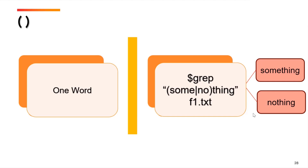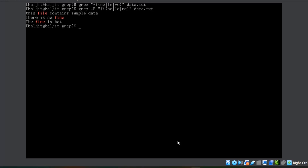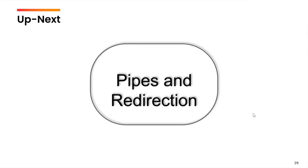The last extended feature is the use of circular brackets (parentheses), where you can do an OR of words. For example, to match 'something' or 'nothing' you write '(some|no)thing'. Similarly, to look for 'fi' followed by either 'ne', 'le', or 're' in data.txt, write 'fi(ne|le|re)'. Remember to use -E with this. You can see all lines which contain 'fi' followed by either ne, le, or re. Removing one option gives the corresponding lines. I hope the use of regular expressions with grep is now clear. In the next video we are going to talk about pipes and redirection.